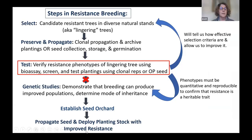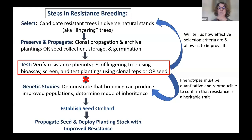The next step after that would be demonstrating that breeding can produce an improved population — that the trait is heritable, passed down from parents to progeny. Testing and phenotyping are so important because if you cannot distinguish between resistant and susceptible trees in a quantitative and reproducible manner, you won't be able to confirm that your trait is heritable. If resistance isn't heritable, you won't get gain through breeding — it might just be environmental influences. For example, with the adelgid, exposure to sunlight has an impact.